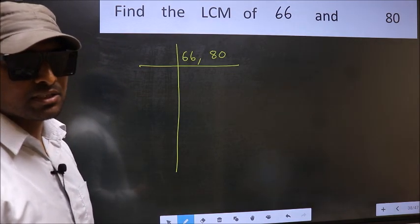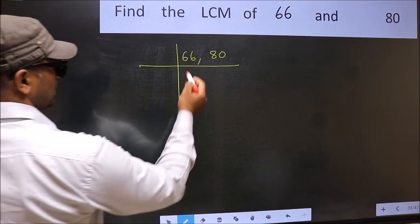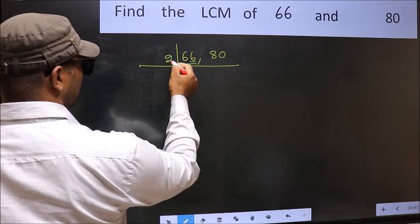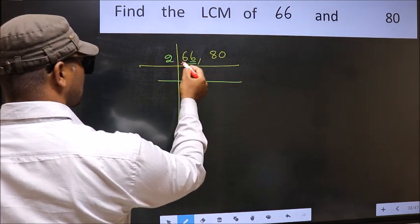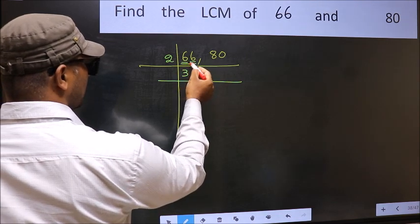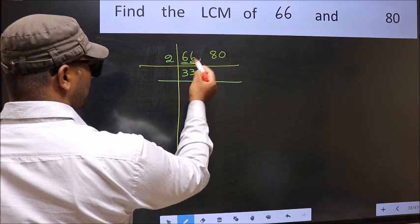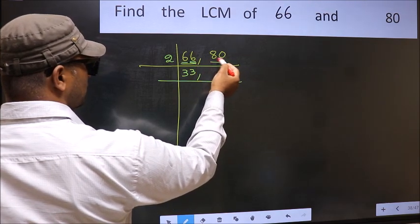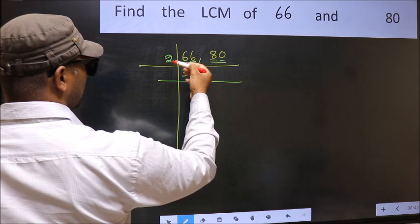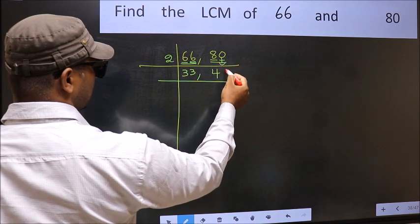Now focus on the first number, which is 66. The last digit is 6, which is even, so take 2. First digit 6: when do we get 6 in the 2 table? 2 times 3 is 6. The other digit 6: 2 times 3 is 6. Now the other number 80, last digit 0, so this is divisible by 2. First digit 8: when do we get 8 in the 2 table? 2 times 4 is 8. Now this 0 as it is down.